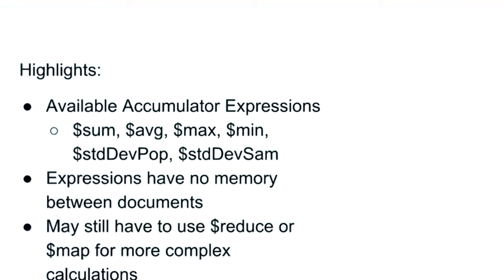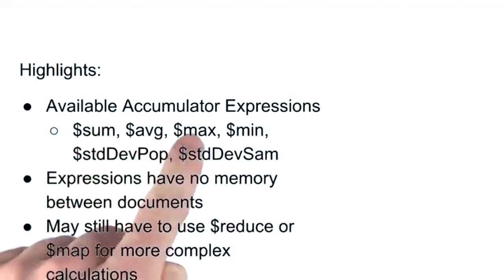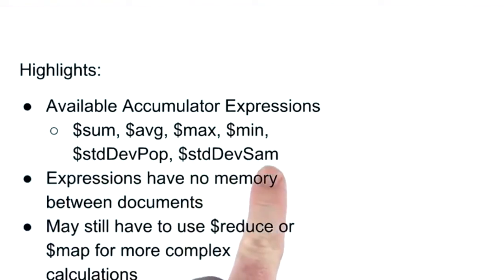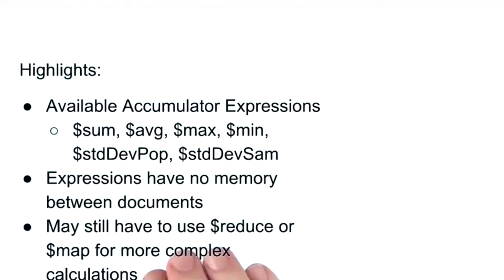The average consumer price index was 221.275 and the standard deviation was around 6.63. We could use this information to find data outside norms to point to areas that might need special analysis. The last accumulator expression is $sum — as the name implies, it sums up the values of an array. The yearly sales were 1,601 million. The available accumulator expressions in project are sum, average, max, min, standard deviation population, and standard deviation sample. Within project, these expressions do not carry their value forward and operate across multiple documents — for that, we need the unwind stage and group accumulator expressions.